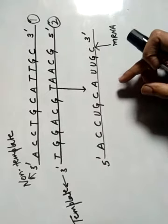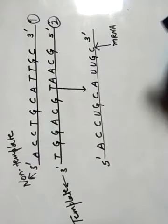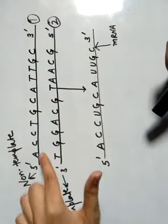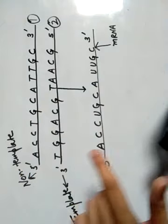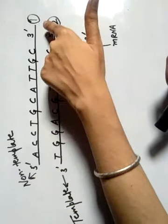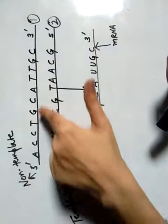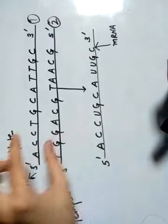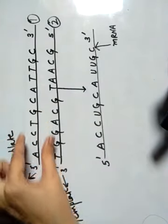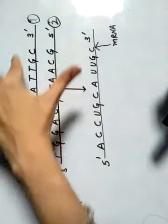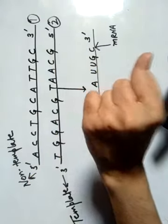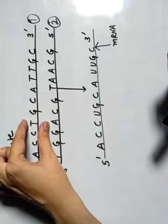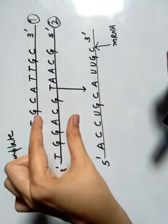Now this mRNA is going to code for amino acids and it will form protein. So it means by using strand number one, you can predict what amino acids are going to be coded for by your mRNA. By using strand number one, you can make a prediction about the coding of your template strand — it will tell you about the amino acids that are going to be coded for your mRNA transcribed by your strand number two. That is why we can call strand number one the coding strand, while strand number two is the non-coding strand.